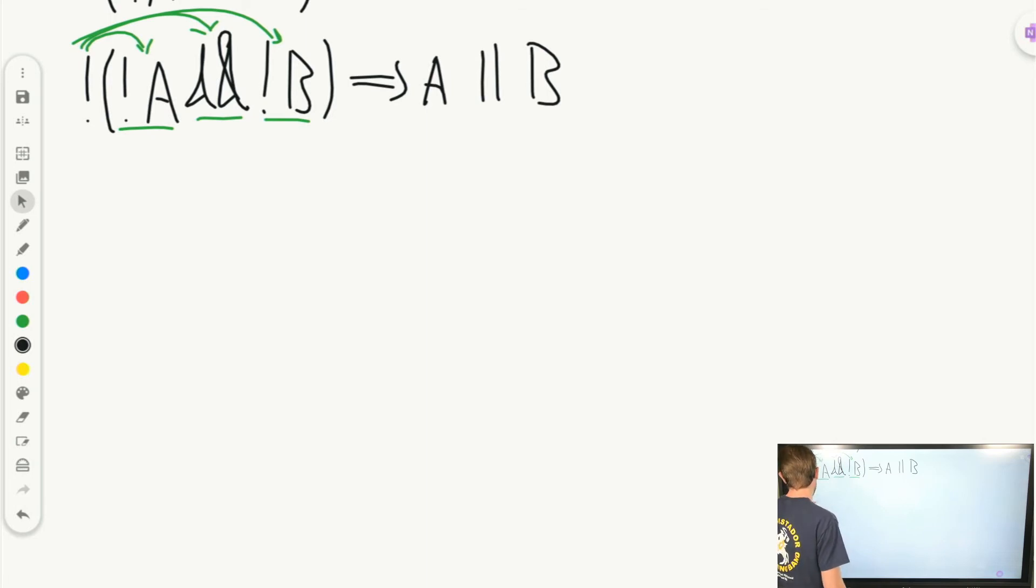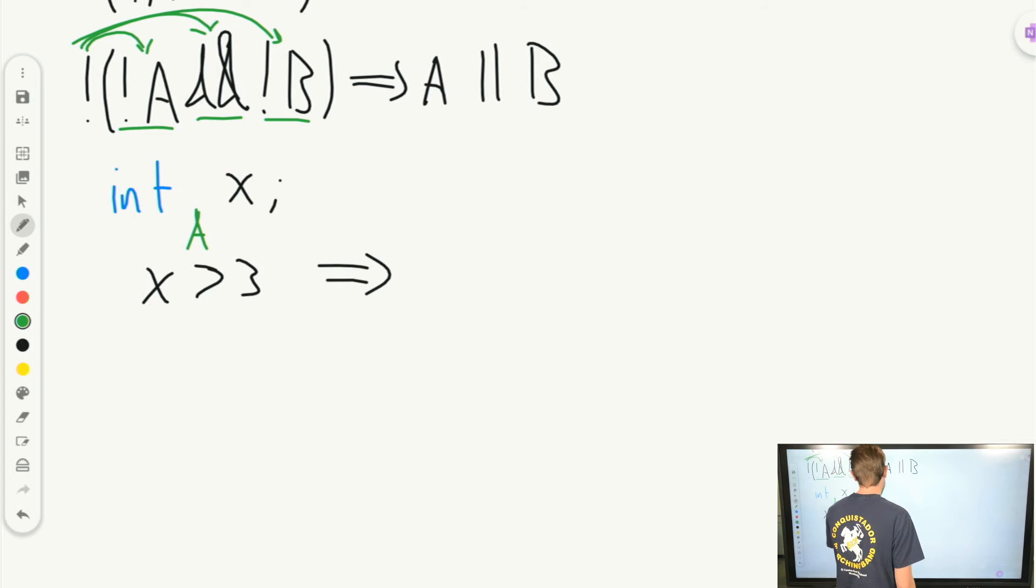So if we have a number, let's say, let's create an integer X. And we want to check that our integer X is greater than a number. So let's say X greater than 3. If we consider this our A statement, so if this is A, then what is NOT A? What is NOT A? Well, that's anything where X is less than 3, right?